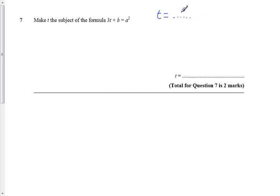Okay, so we want a t equals equation at the end. So let's write it out. 3t plus b equals a squared.